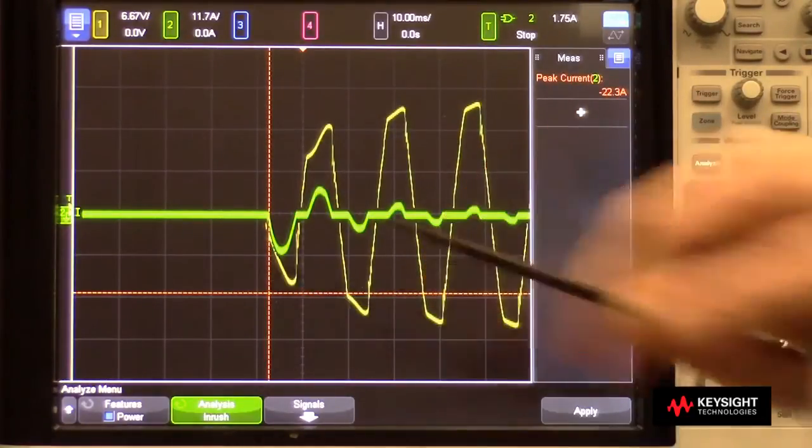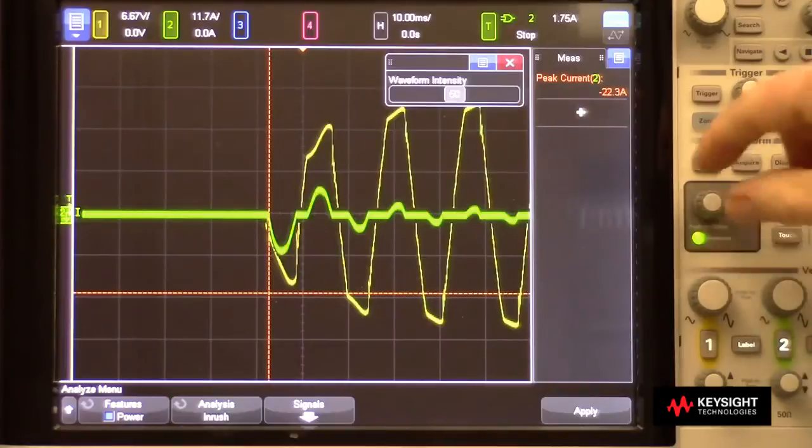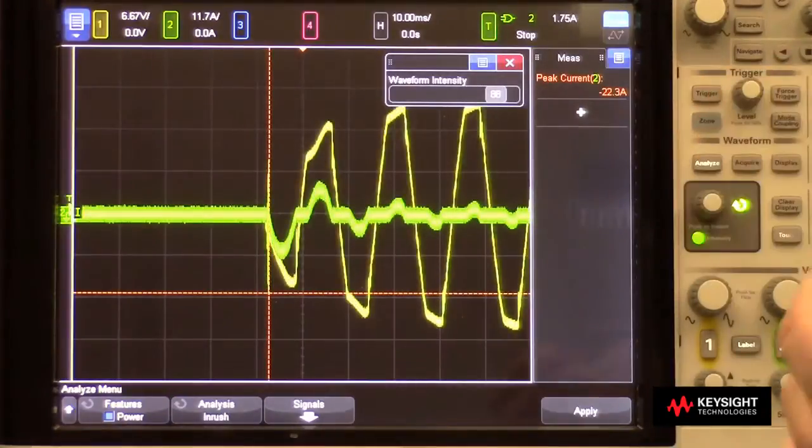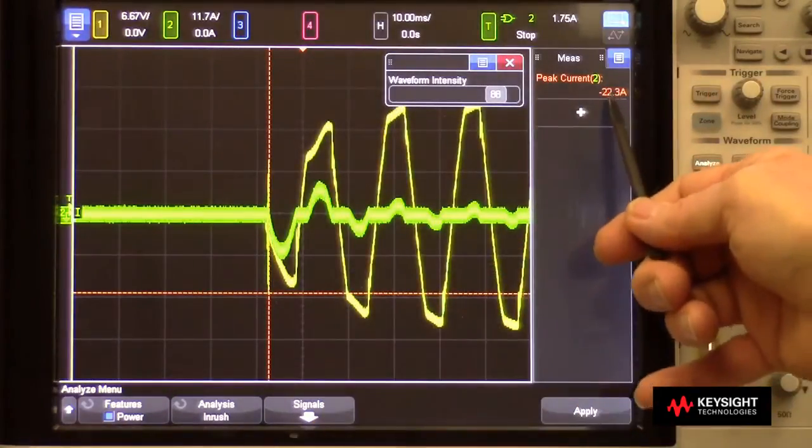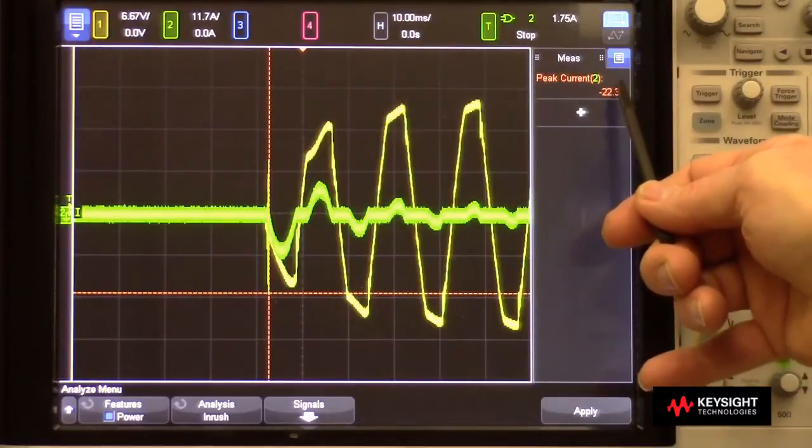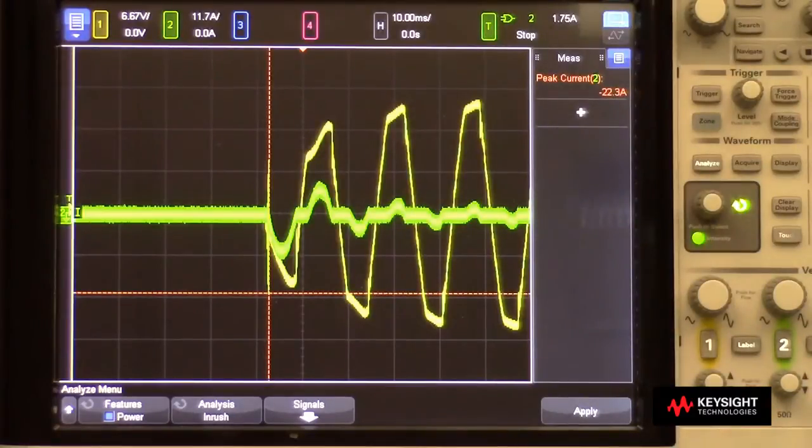But way down here, it's kind of hard to see, is a very narrow current spike. I'll turn the intensity up, and it measured about 22.3 amps, negative.